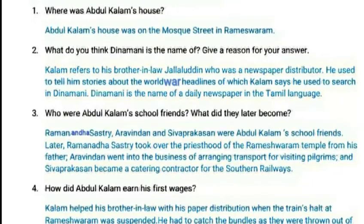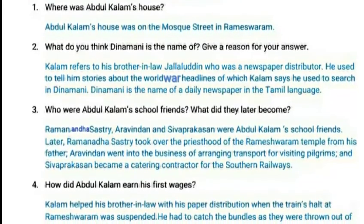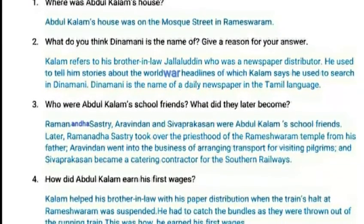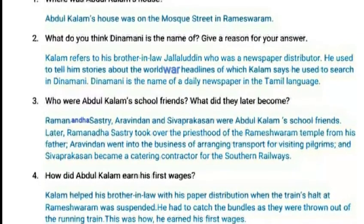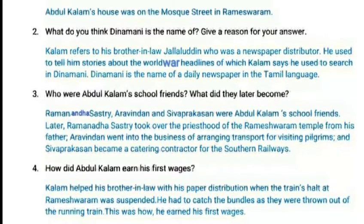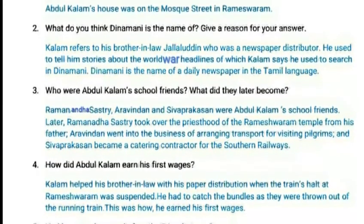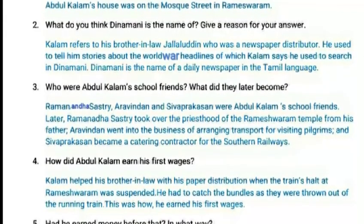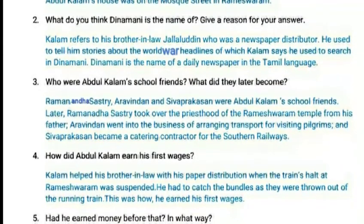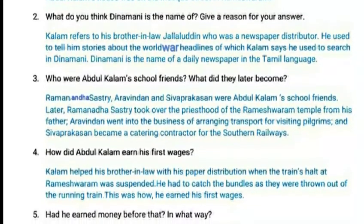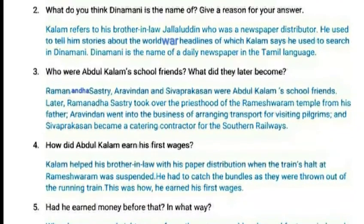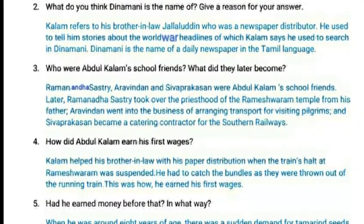Question 4: How did Abdul Kalam earn his first wages? Kalam helped his brother-in-law with his paper distribution. When the train's halt at Rameshwaram was suspended, he had to catch the bundles as they were thrown out of the running train. This was how he earned his first wages.